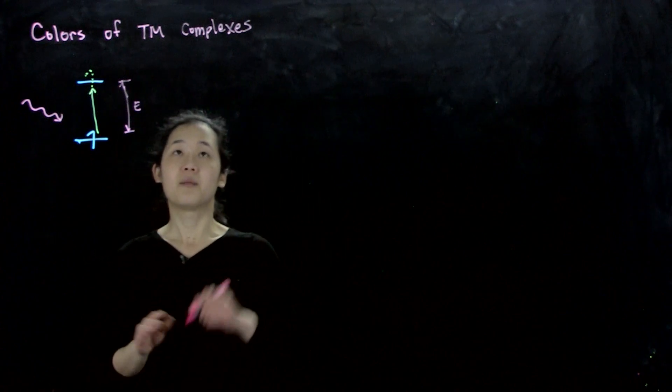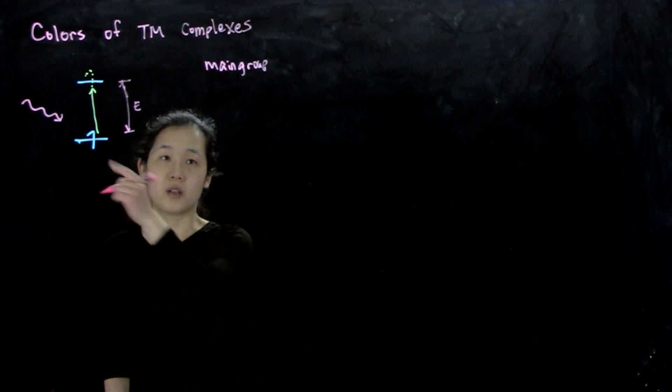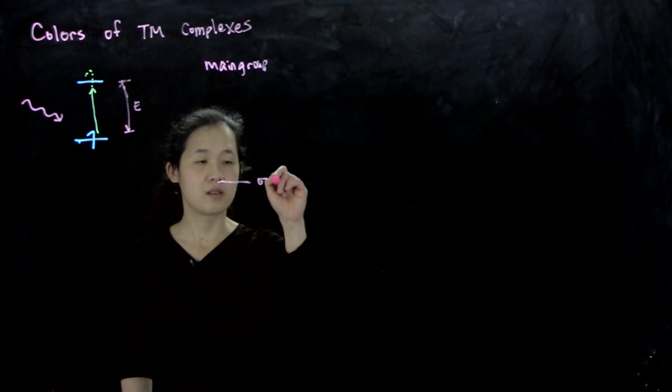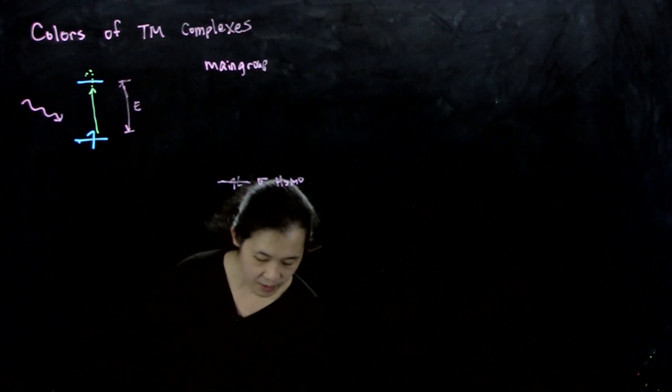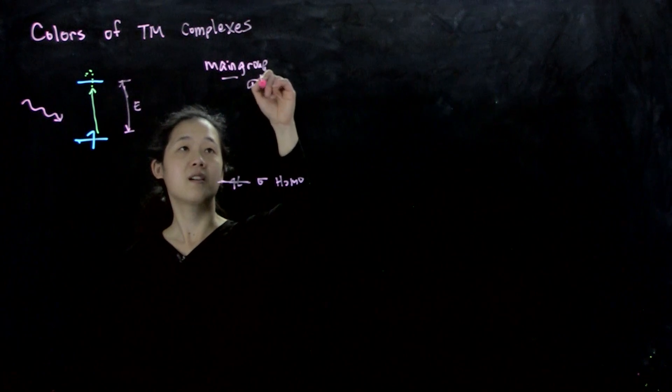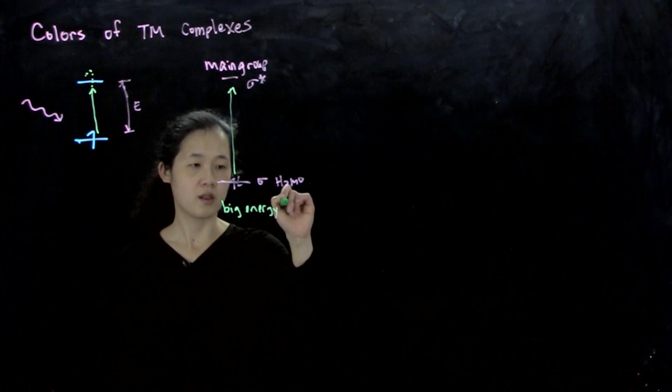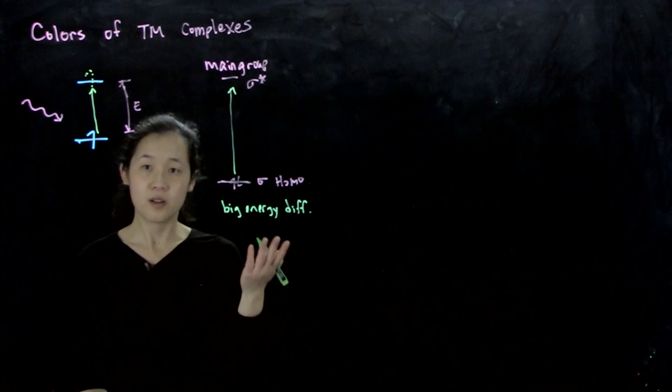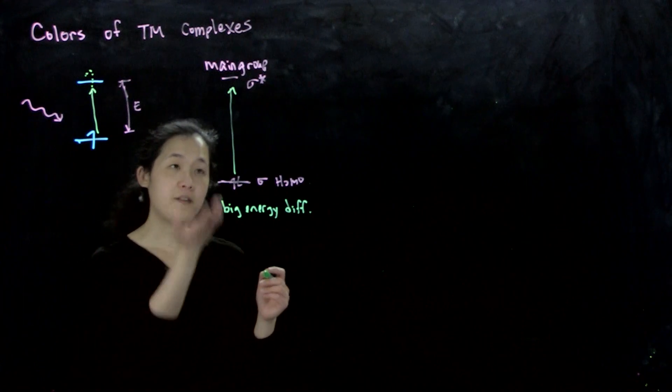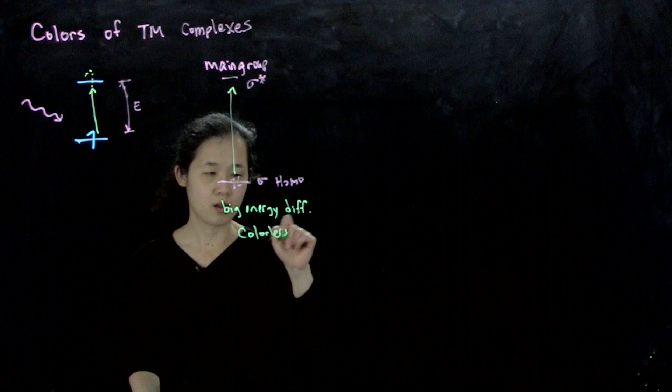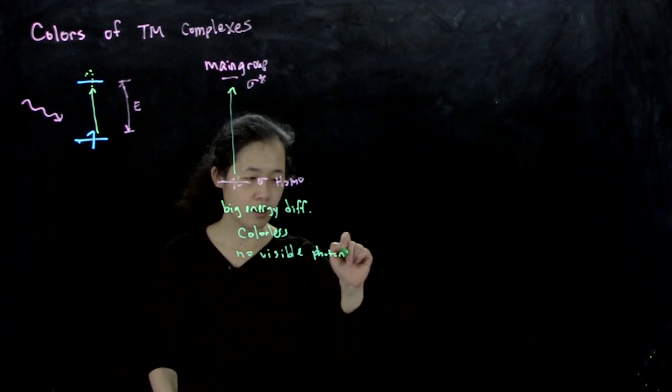For example, a lot of main group compounds, like organic compounds, alkanes and stuff, our HOMO is going to be some sort of sigma bond with your electron here, and then your empty orbital will be your sigma star, which I'll draw up here. This energy is very big, so big energy gap. You need a really high powered photon to get that to go, so high photon energy. It won't absorb any visible photons, which are lower energy than like UV for example, and so often these compounds are colorless. No visible photons absorbed. Too low energy. The visible photons are lower energy than this gap.